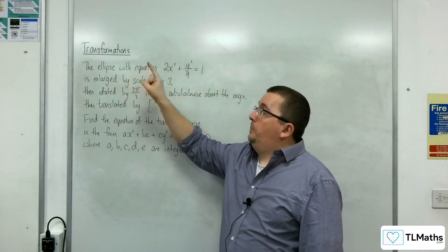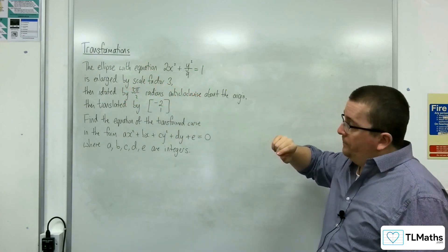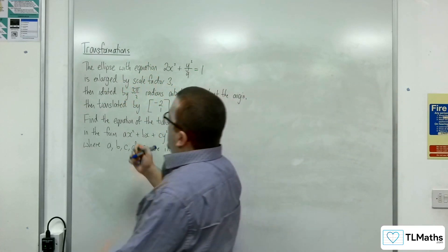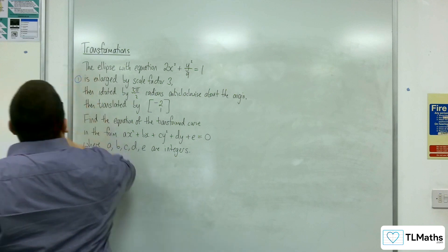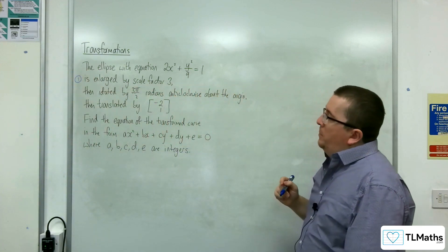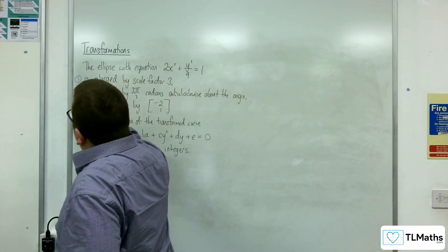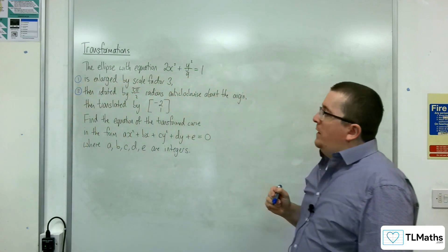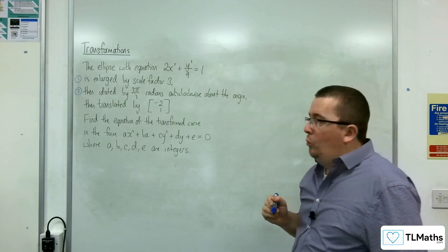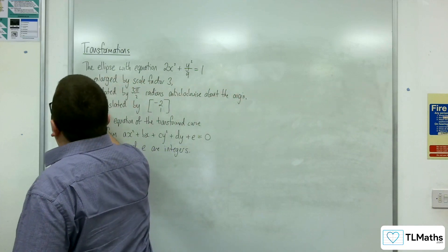The first is that it's been enlarged by scale factor 3. So let's label them. That'll be number 1. Then it's been rotated by 3 pi over 2 radians, anticlockwise about the origin. That's number 2. And then it's been translated by the vector minus 2, 1. So that's number 3.